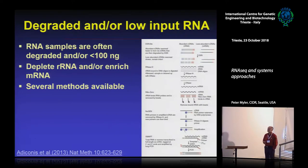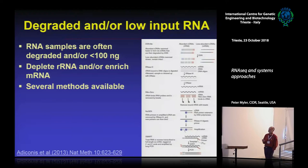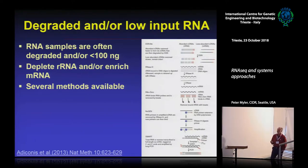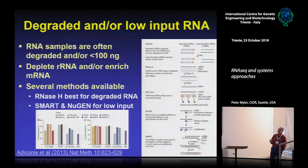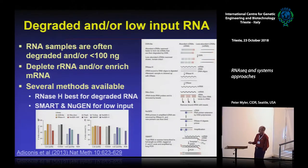There are a number of problems to worry about. Your RNA can't be degraded and you need moderately small amounts, though you can get away with very small amounts now. You need to deplete ribosomal RNA or you'll find that most of your sequence is ribosomal, not messenger RNA. There are lots of different methods available, and the choice depends on your situation. Frankly, probably what's most important is what kit you can buy for the right price.